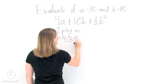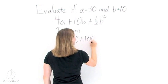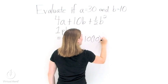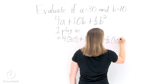So, anywhere you see an A, write 30, and anywhere you see a B, write 10. That way, all you have left is numbers in your expression.